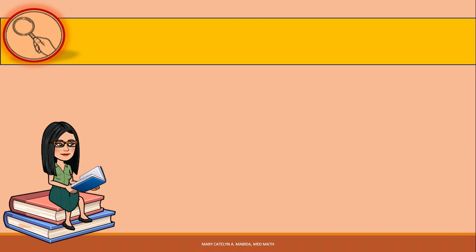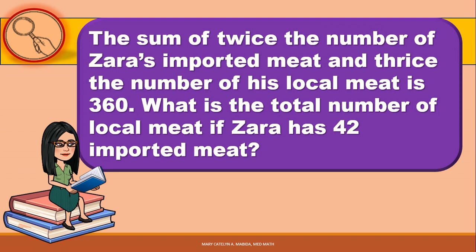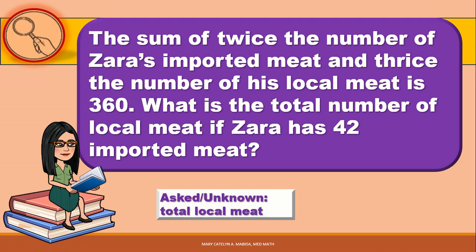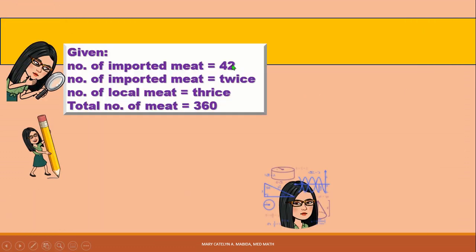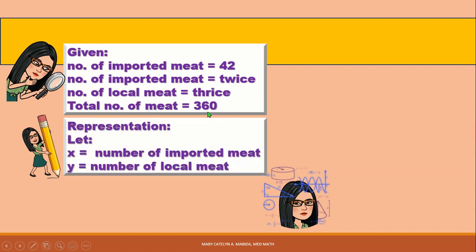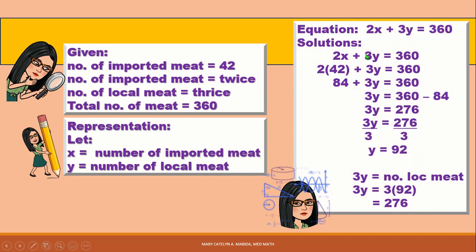Now let us have another example. The sum of twice the number of Zara's imported meat and thrice the number of local meat is 360. What is the total number of local meat if Zara has 42 imported meat? The unknown is the total number of local meat. The given are: number of imported meat is 42, and twice the imported meat plus thrice the local meat equals 360. Let X be the number of imported meat and Y be the number of local meat. Our equation is 2X plus 3Y equals 360.